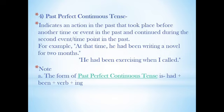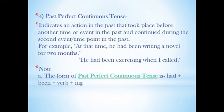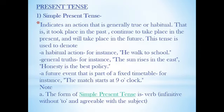Past perfect continuous tense indicates an action in the past that took place before another time or event in the past and continued during that second event. For example: 'At that time, he had been writing a novel for two months'; 'He had been exercising when I called.' The form is 'had been' plus verb plus '-ing.' Note the difference: sometimes you use 'was/were,' sometimes 'have/had,' sometimes just '-ing,' and sometimes 'had been.'